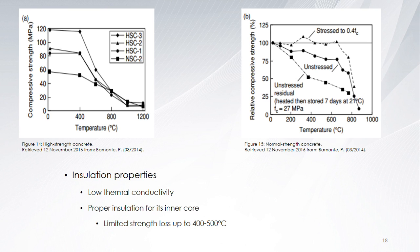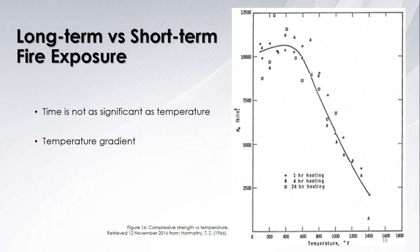The figures above plot compressive strength versus temperature of high strength concrete on the left and normal strength concrete on the right. You can tell that during the first 400 to 500 degrees Celsius, compressive strength remains relatively unchanged. This is due to the low thermal conductivity of both concretes, which provides proper insulation for the inner core limiting its strength loss. Regarding long-term versus short-term fire exposure, there was limited research on how fire exposure is affected by time, possibly due to the large range of variables that could have influenced it. However, it is highly dependent on the temperature gradient. The graph on the right plots strength versus temperature of a concrete sample heated for 1, 4, and 24 hours. The results are relatively close to one another, suggesting that temperature plays a more significant role than the time period the heat was applied.